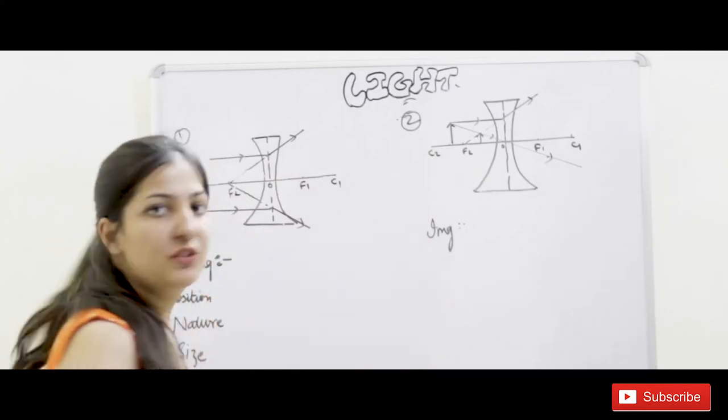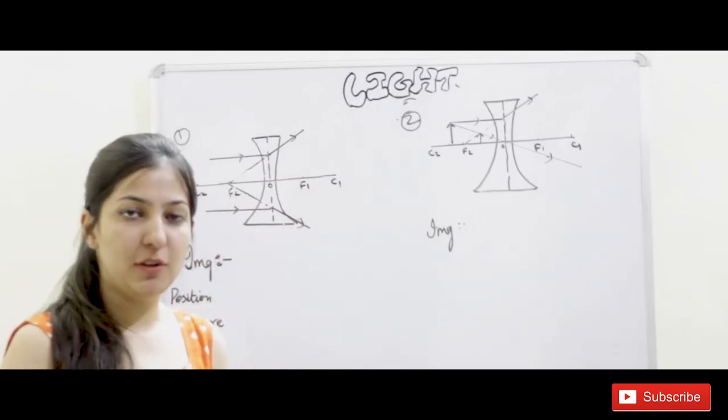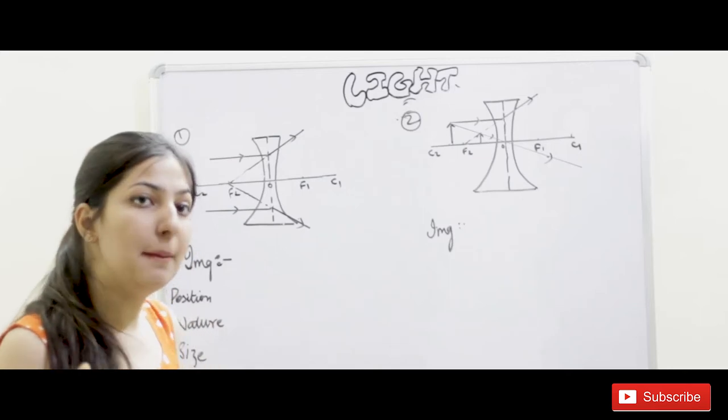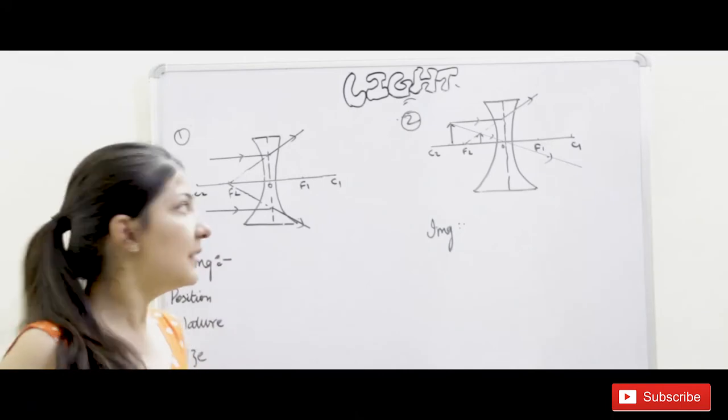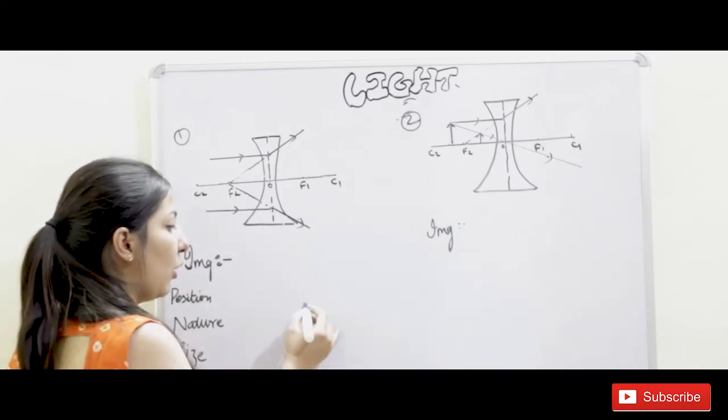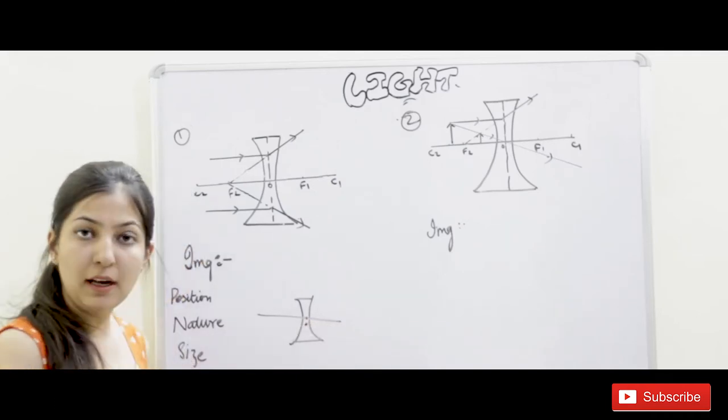Now we are going to study image formation cases for a concave lens. Concave lens image formation cases. So we are going to study convex mirror. First of all, we are going to be parallel. First of all, we are going to make a concave lens. Then we have optical center.